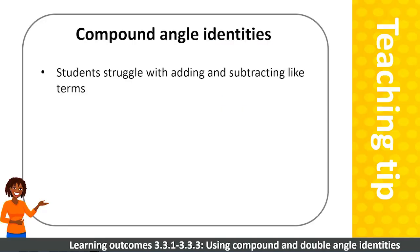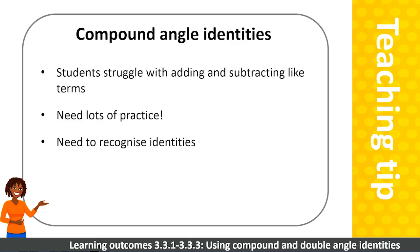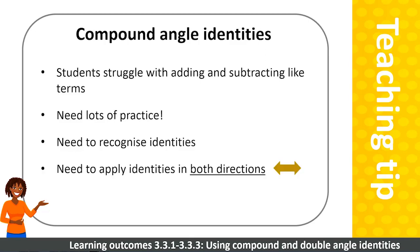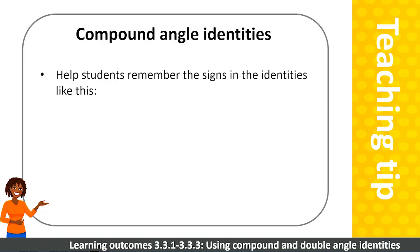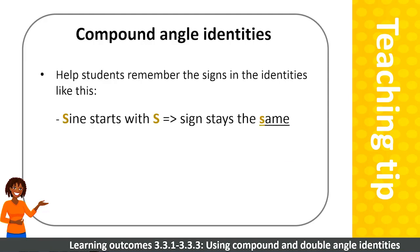Students often struggle with adding and subtracting like terms in trig and need plenty of practice with this. Students need to recognize these identities and apply them in both directions. Help students remember the signs in the identities like this: sine starts with S, so the sign stays the same. Cos starts with C and stands for change, so the sign in the identity changes.